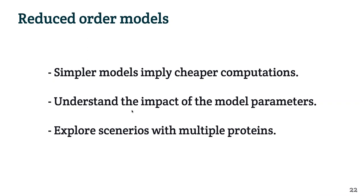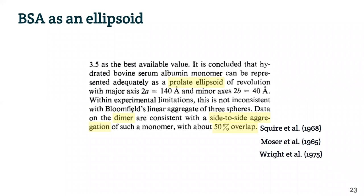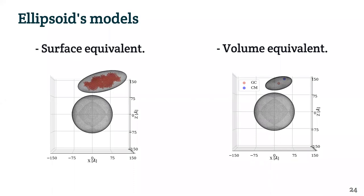The first attempt to generate a reduced order model was representing the BSA protein by an ellipsoid — specifically a prolate ellipsoid — because we found in the literature that this revolution ellipsoid can be a good representation of the protein. How to choose the dimensions of this ellipsoid was a key question. We proposed two different models. The first is a surface equivalent model, which generates an ellipsoid that includes all the charges inside the protein. We generated this ellipsoid using principal component analysis on the vertices of the original mesh, obtaining the principal axes of an ellipsoid that would encapsulate all the charges.